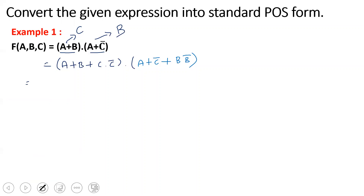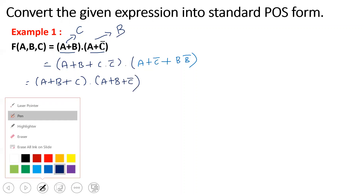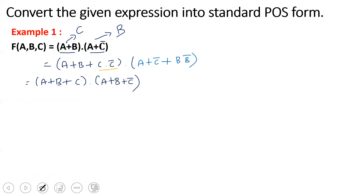Now we split the terms. For the first part, A+B plus C·C-bar splits into (A+B+C) and (A+B+C-bar). For the second part, A+C-bar plus B·B-bar splits into (A+C-bar+B) and (A+C-bar+B-bar), giving us A+B-bar+C-bar.